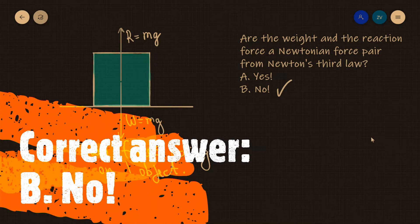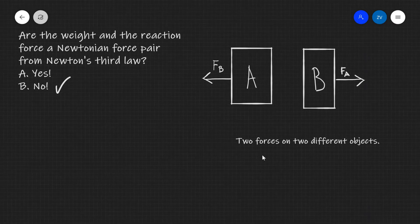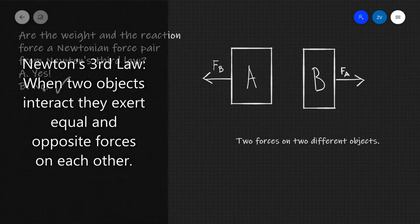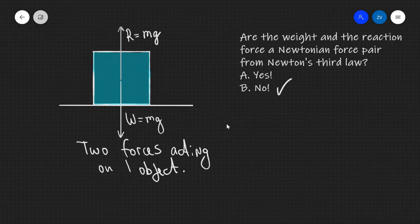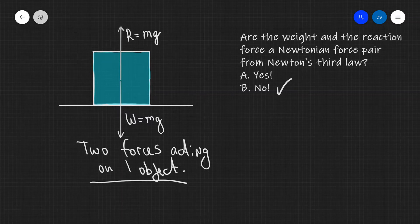The reason for that is because when we talk about Newton's third law, which says that when two objects interact they exert equal and opposite forces on each other, we have two separate forces acting on two different objects. In the case that we looked at, we have two different forces R and W, but they only act on one object. So this is really important. They can't be a Newtonian pair.